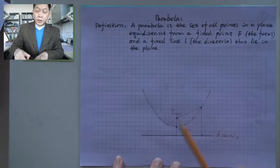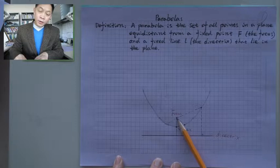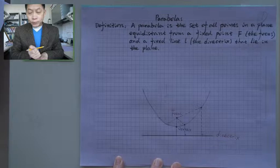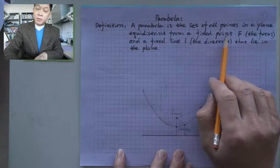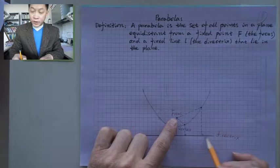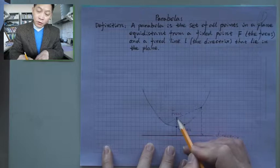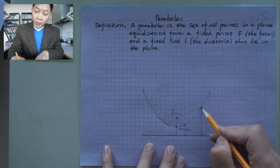The light has to be perpendicular to the directrix, then it will reflect to the focus. In the definition, a parabola is the set of all points in a plane equidistant from a fixed point F and a fixed line, the directrix. You can see this point is equidistant from the focal point and the directrix.